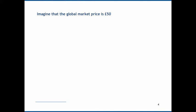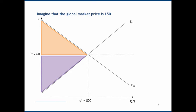Now let's imagine the global market price is £50. This country is too small to affect that price — they simply respond to it. We can represent this as a horizontal curve at price equals 50. Plugging 50 into the supply equation (20p minus 400) tells us domestic suppliers will only produce 600 units. Plugging 50 into the demand equation tells us domestic consumers will demand 1,000 units. The shortfall is made up by imports, giving us imports equal to 400 units.